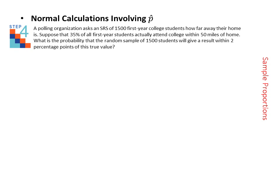A polling organization asks an SRS of 1,500 first year college students how far away their home is. Suppose that 35% of all first year students actually attend college within 50 miles of home. What is the probability that the random sample of 1,500 students will give a result within 2 percentage points of this true value? We will use the four step process of state, plan, do, conclude.